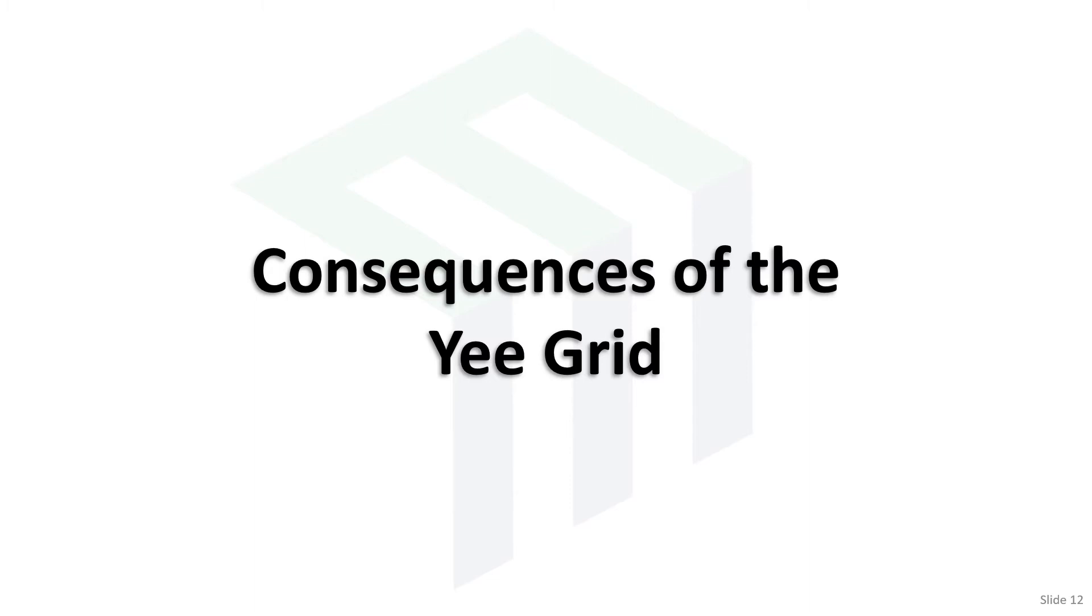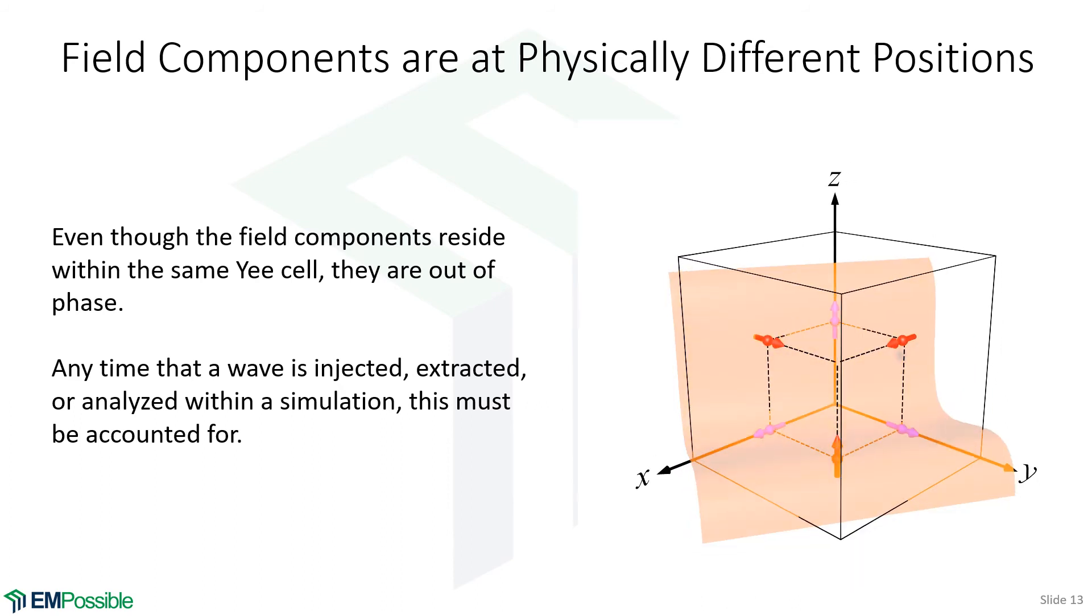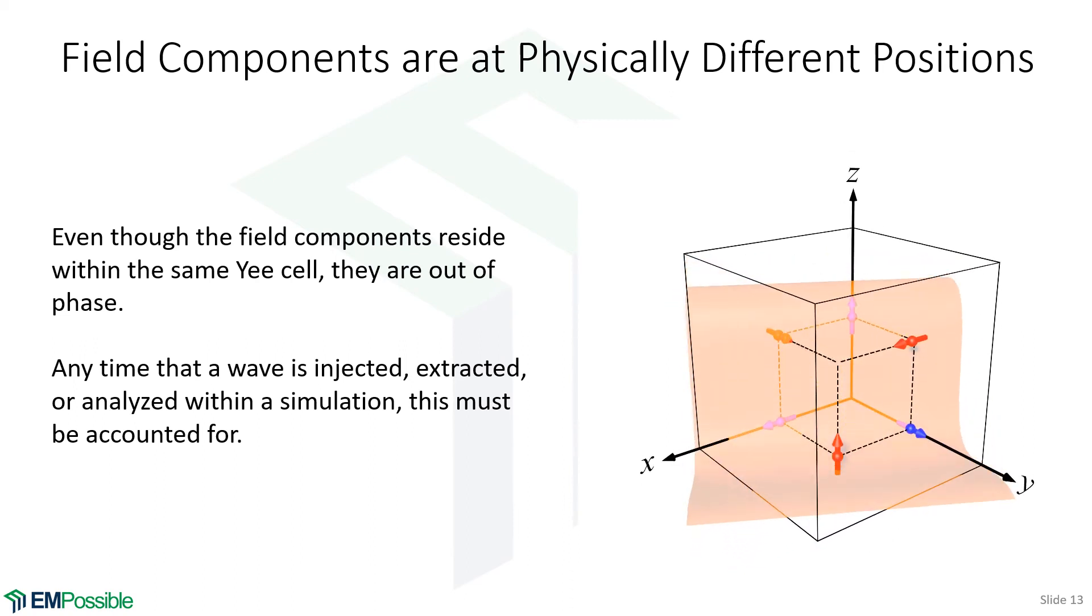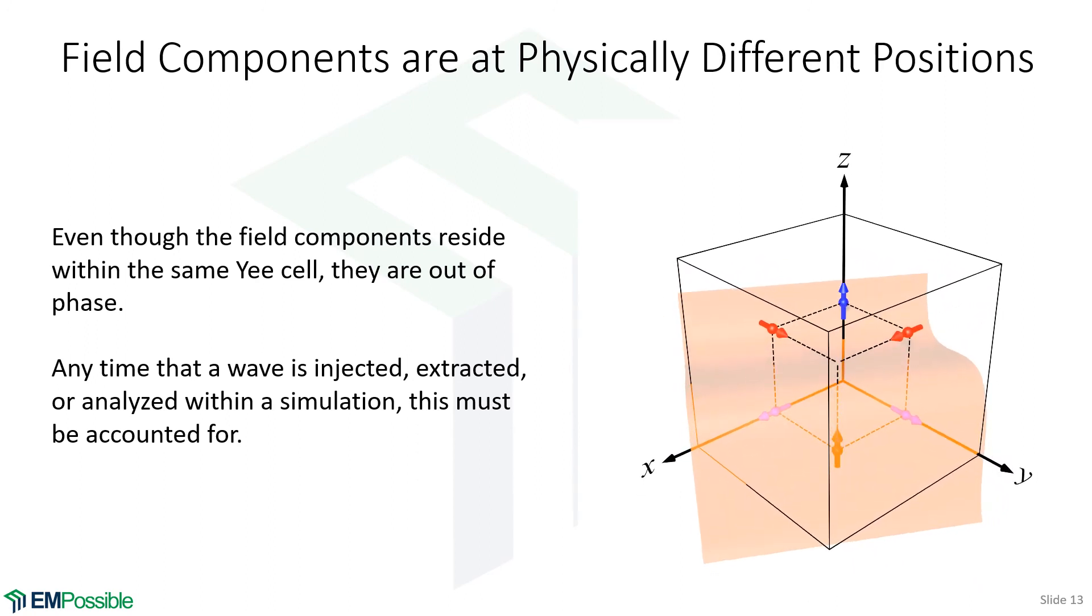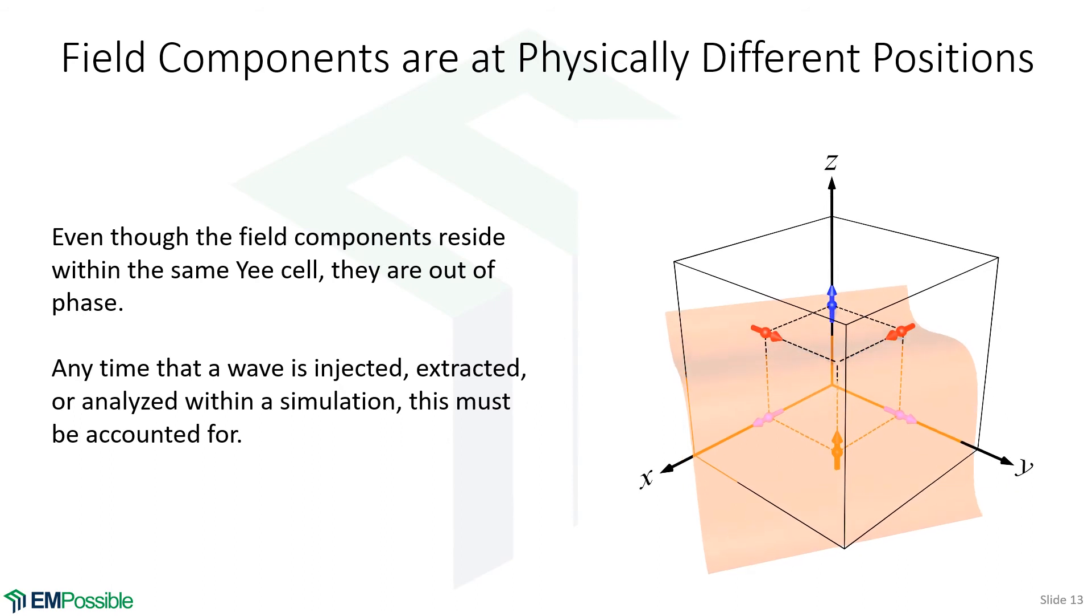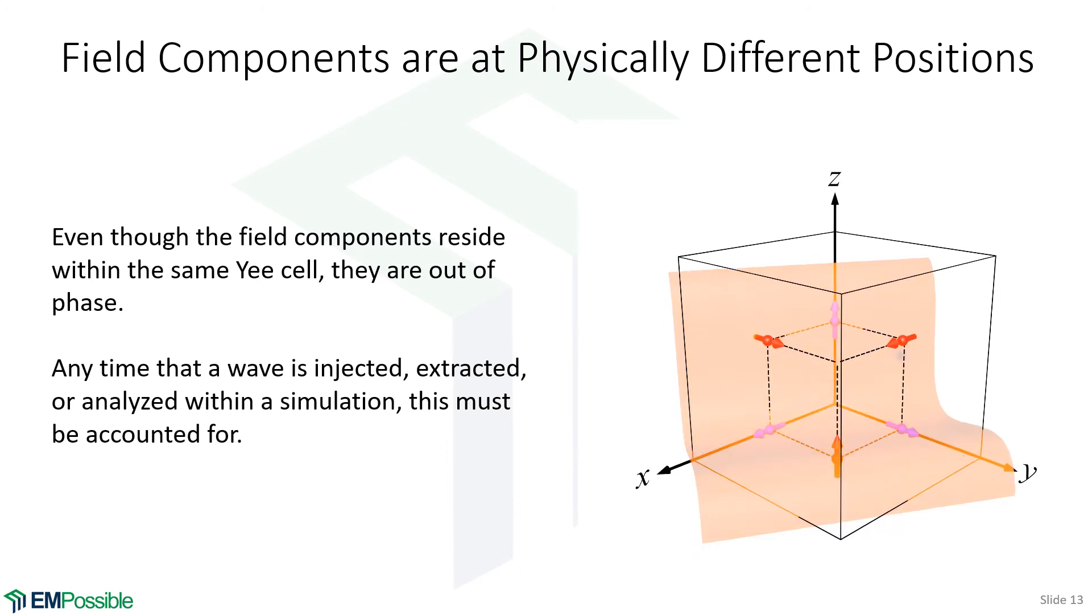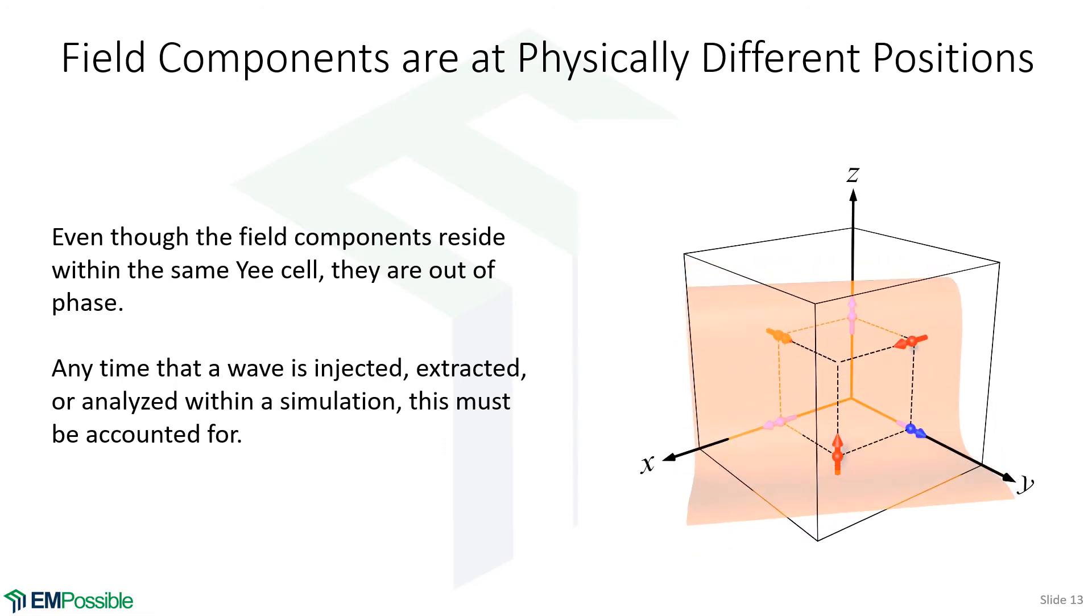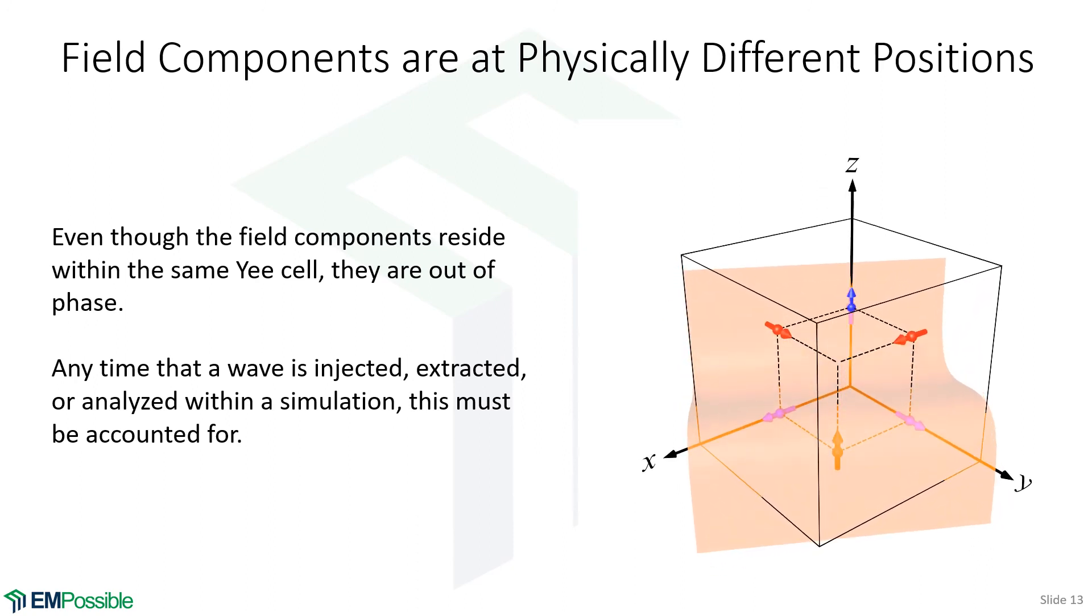Consequences of the Yee grid. We do have to pay some prices for the Yee grid and staggering our field components. Here we're looking at an animation of one cell in a larger lattice with our six field components and a wave passing by. Notice certain field components are in different parts of that wave. Those field components are out of phase. Even though they are XYZ components of the same electric or magnetic field, since they're in physically different positions, they're out of phase. So anytime we want to inject a wave into a Yee grid, extract a wave, or analyze a wave, we have to take this into account, or problems and inaccuracies will arise.